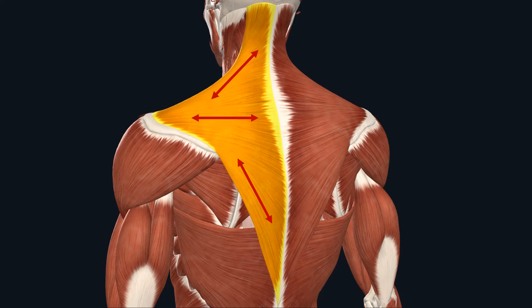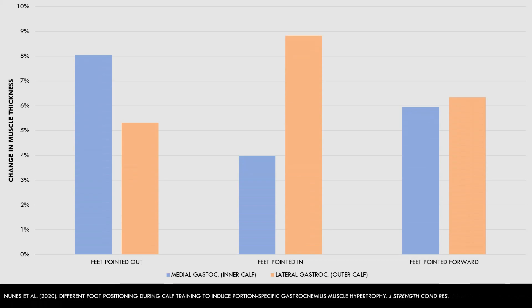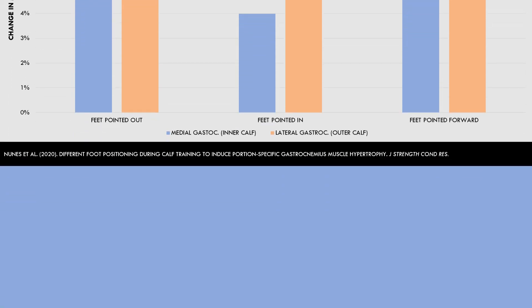The only study showing direct evidence of fiber-specific hypertrophy looked at the effect of different foot positions during calf training on gastrocnemius hypertrophy. It was found that performing calf raises with the feet pointed outward resulted in greater muscle growth of the inner calf head, while pointing the toes inward resulted in greater hypertrophy of the outer calf. So it is relatively clear that we can in fact preferentially hypertrophy different fibers of the same muscle.